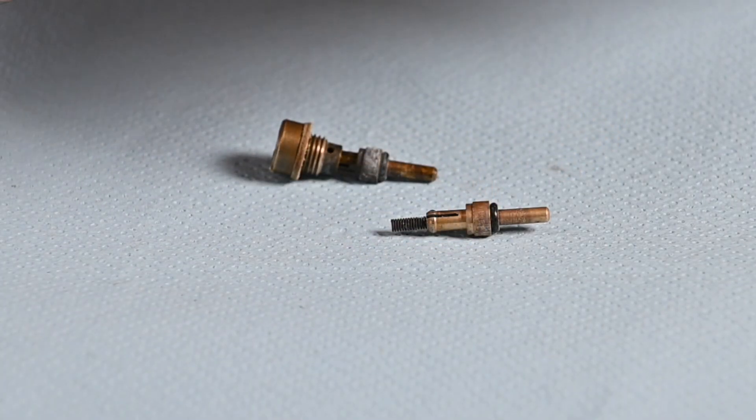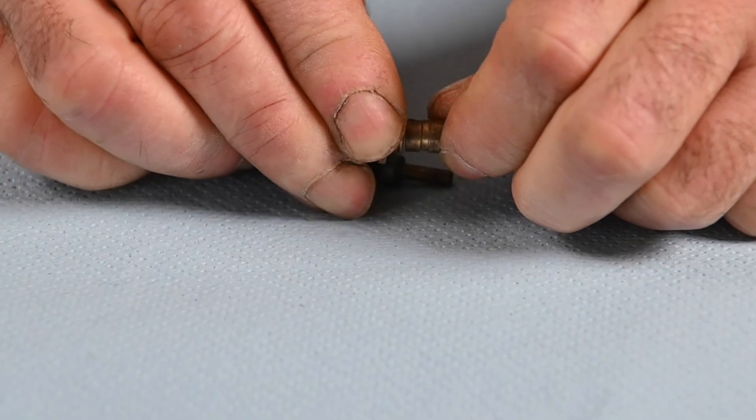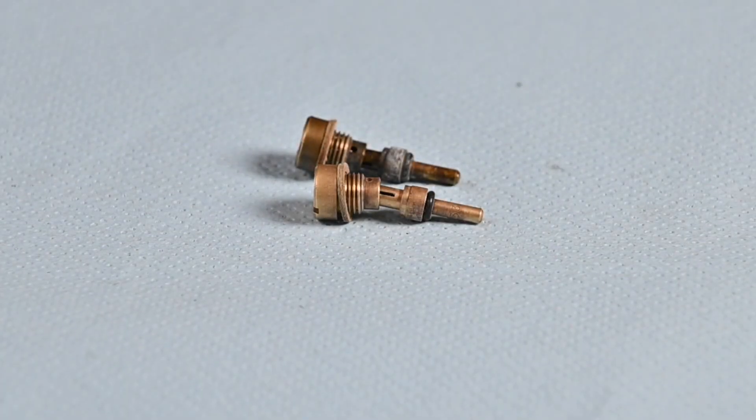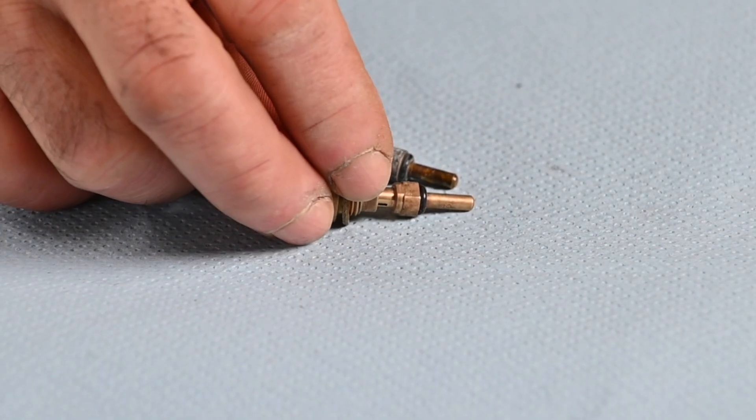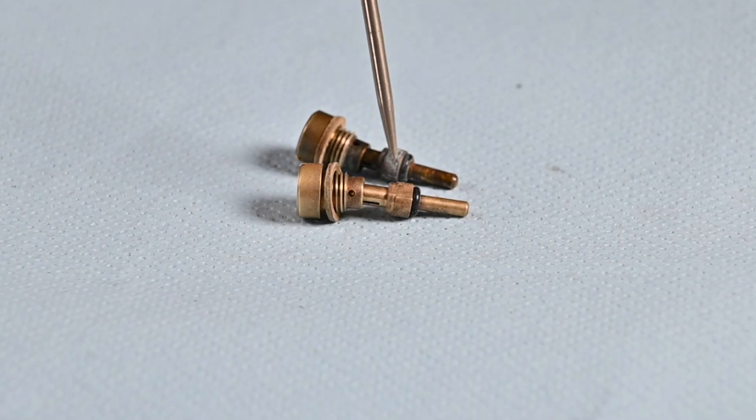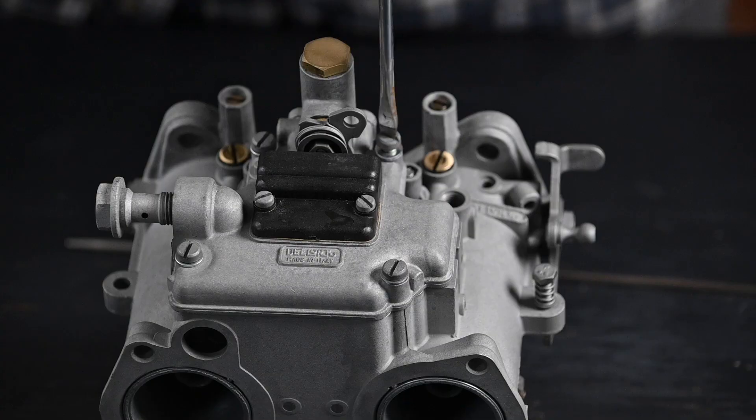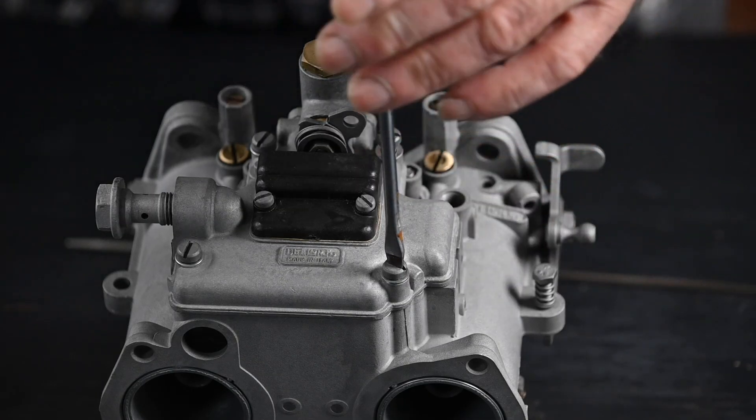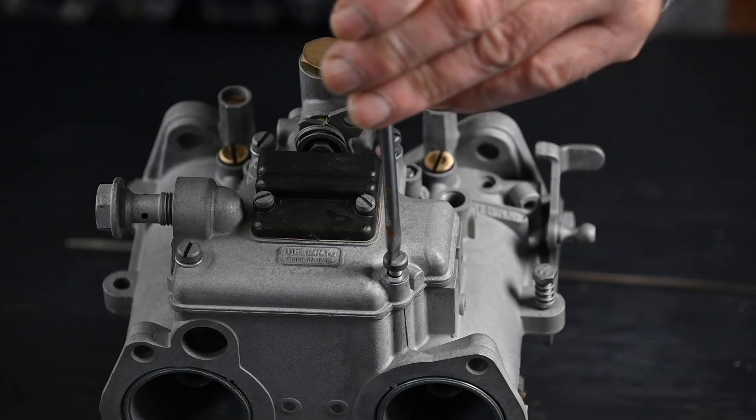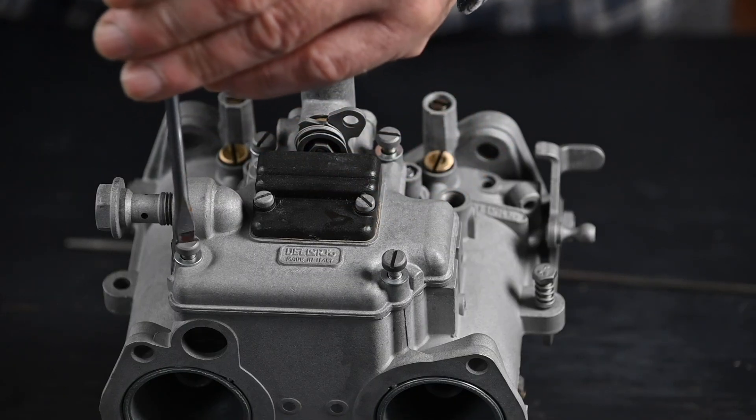Now the jet can have an opening on the side, then we talk about a horizontal jet, but it can also have the opening on the tip facing downwards, then we talk about a vertical jet. It depends on your specific carburetor, but on a DHLA you typically have the horizontal type. You can get different jets for different applications. The more generic jet is between 35 and 40.